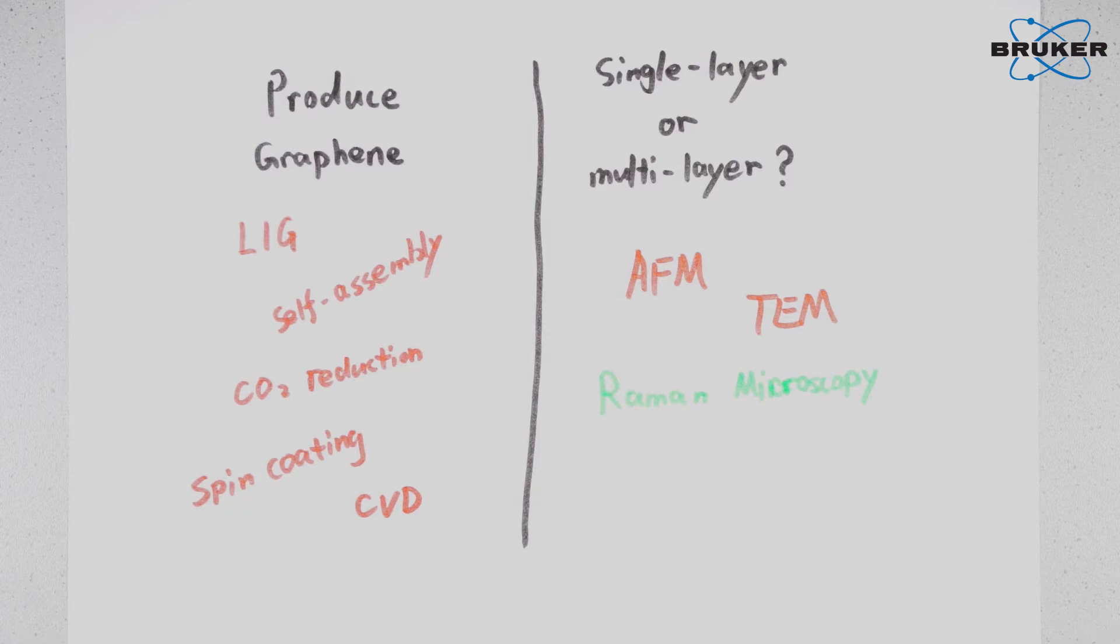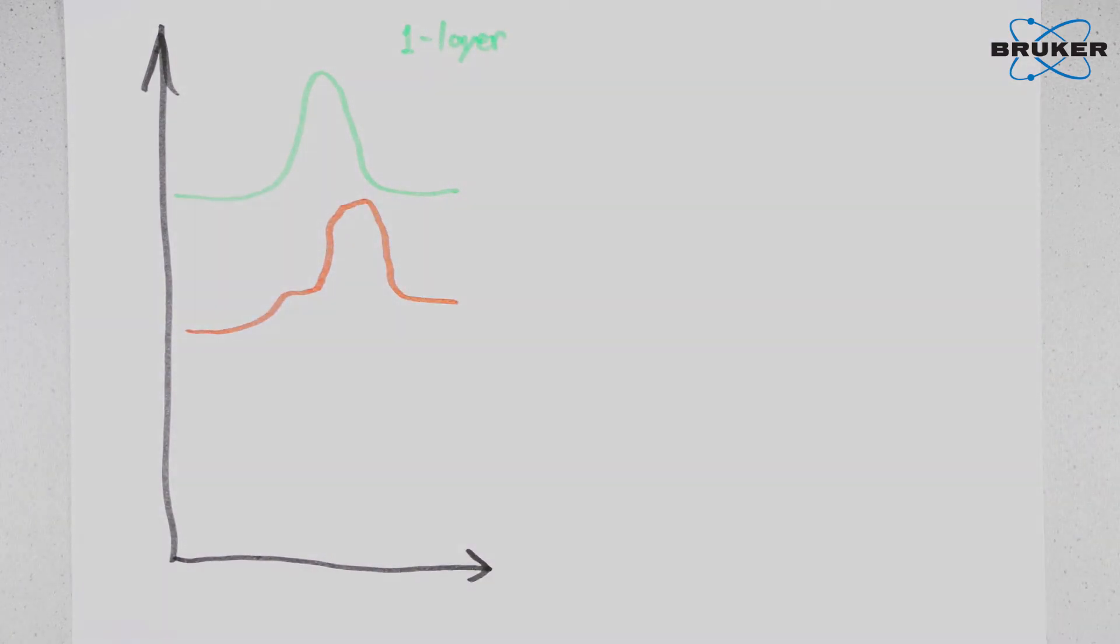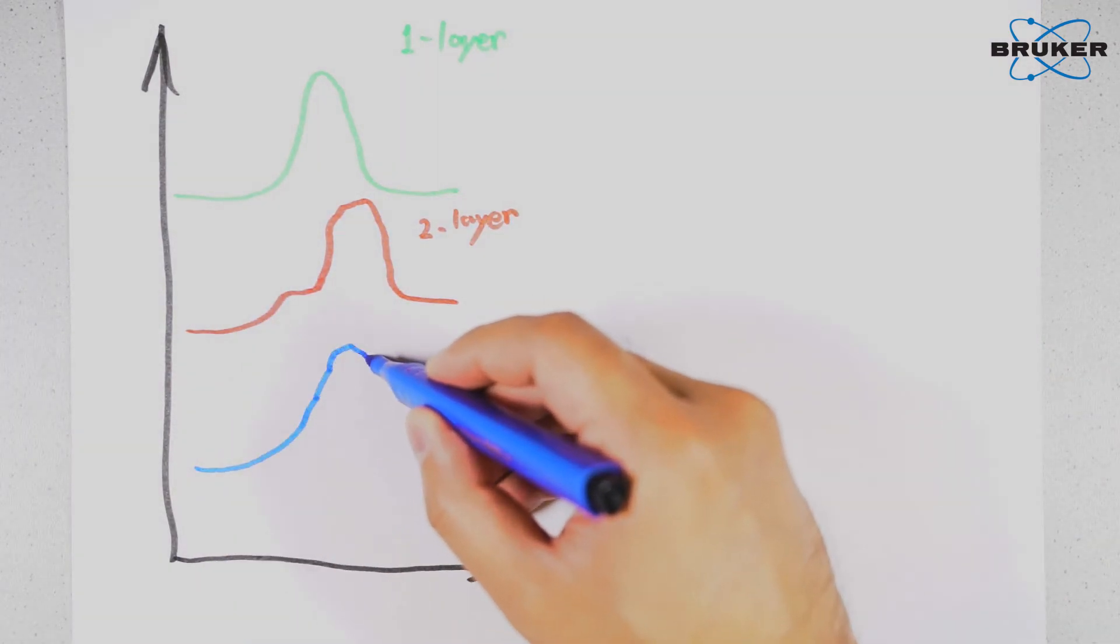The frequencies of Raman bands are sensitive to the layer structure. Therefore, one layer graphene and two or three layer graphene have different Raman bands.